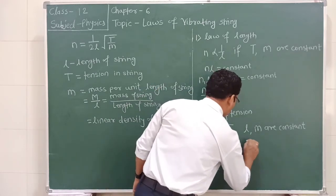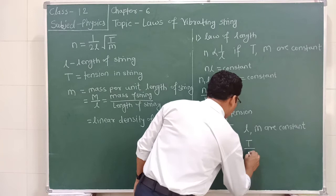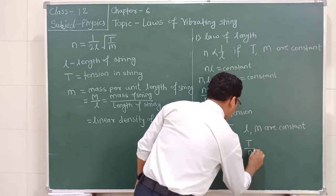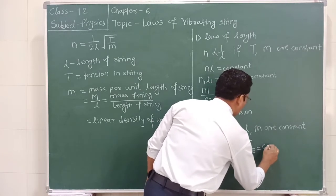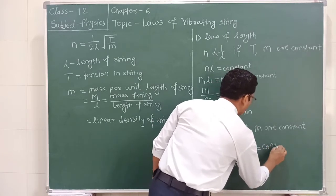Therefore n divided by square root of T is also equal to constant.